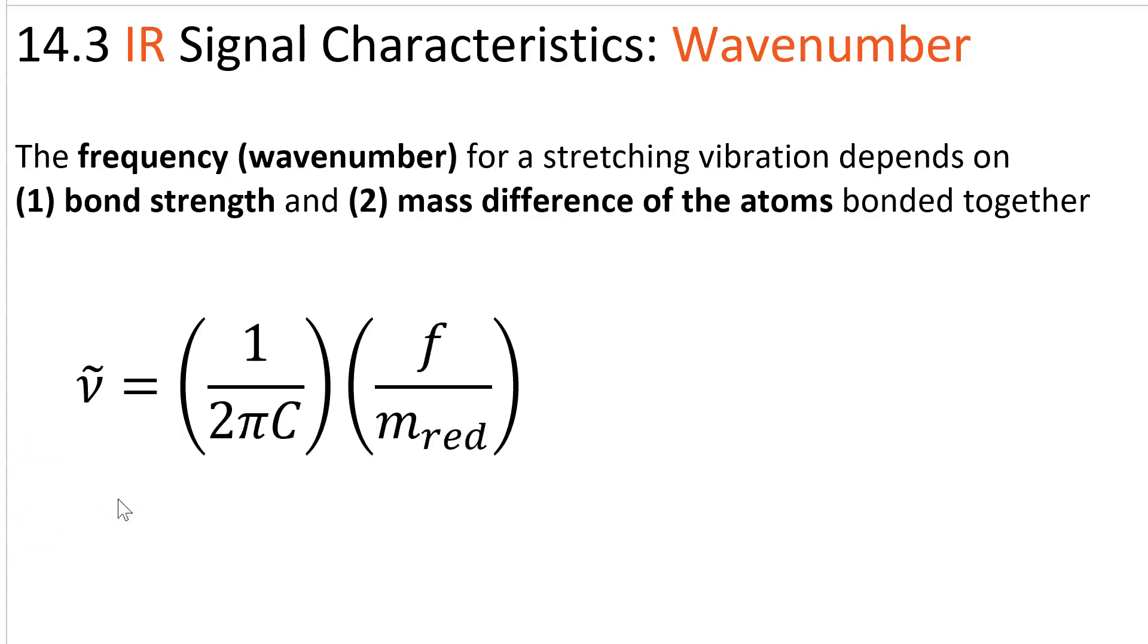And here is an equation. Nu tilde, or wavenumber, equals this constant, 1 over 2 pi c, where c is the speed of light in centimeters per second, times this quotient.